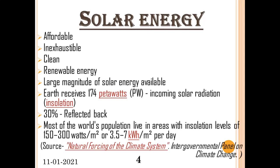The large magnitude of solar energy available makes it a highly appealing source of electricity. The Earth receives 174 petawatts of incoming solar radiation, also known as insolation, at the upper atmosphere. Approximately 30% of it is reflected back to space, while the rest is absorbed by clouds, oceans, and land masses. Most of the world's population live in an area with insolation levels of 150 to 300 watts per meter square, or 3.5 to 7 kilowatt hours per meter square per day.